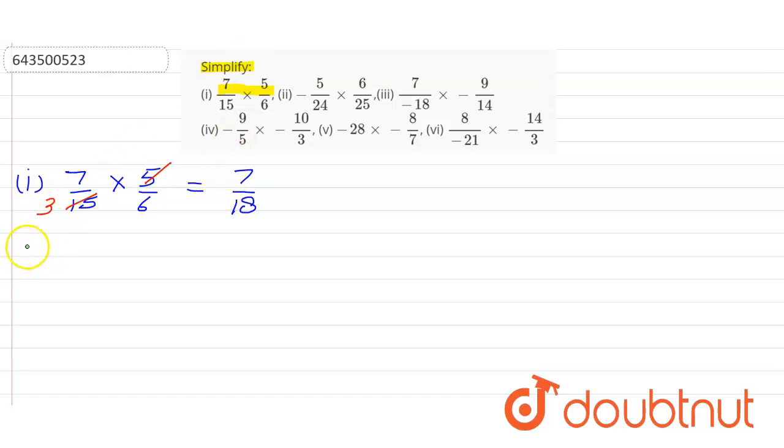Let's consider part 2 now, in which they gave us minus 5 by 24 multiply with 6 by 25. One thing we should notice here: if one value is positive and one is negative, the result will definitely be a negative value.